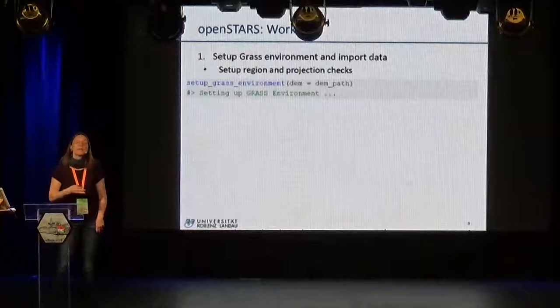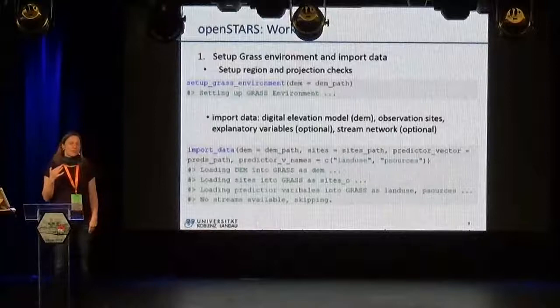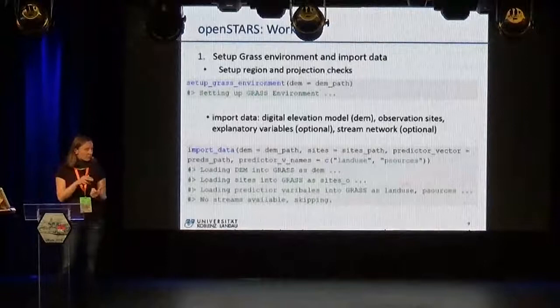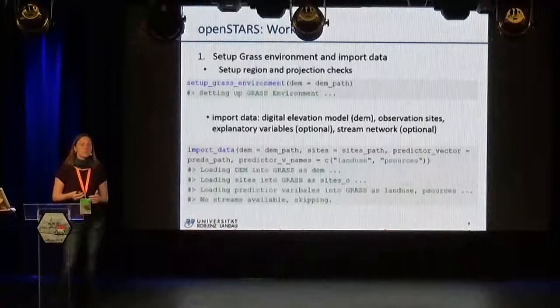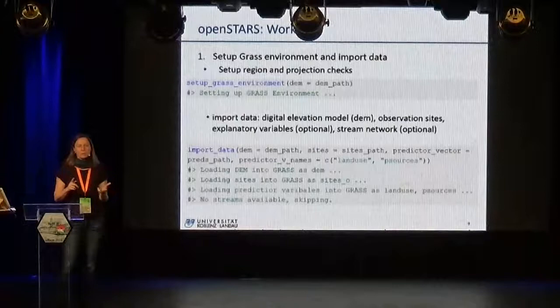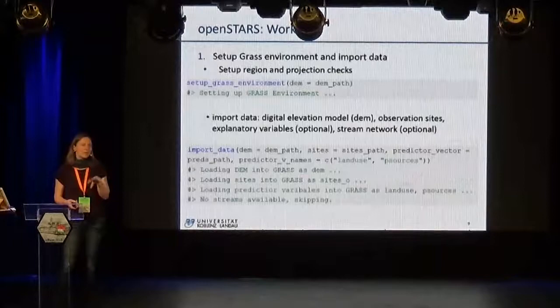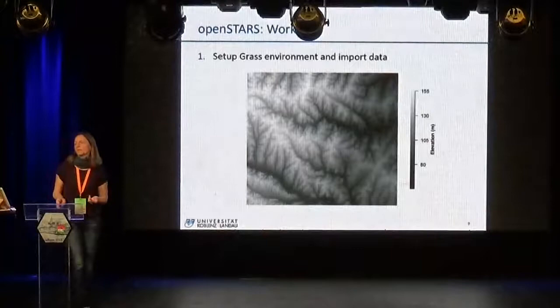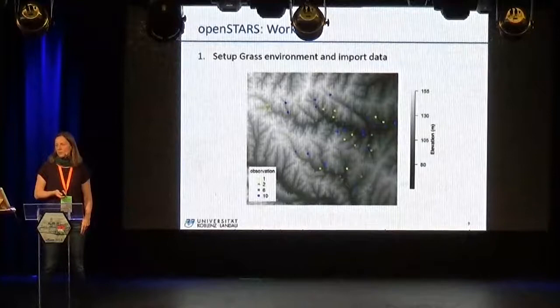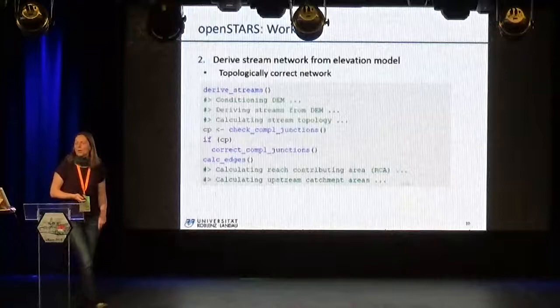What does the workflow look like? The first step is to set up the GRASS environment, which takes care about the region we are looking at and the projection checks. Then you import the data: the digital elevation models and the points where measurements were taken — this is mandatory. Additionally, you can import potential explanatory variables, so covariates that can be raster or vector data like land use, soil, geology, point sources, slope. You can also import a stream network that will be burned into the digital elevation model and then the final stream network is derived. The data includes a digital elevation model, points with observations, a land use layer, and point sources such as black dots.